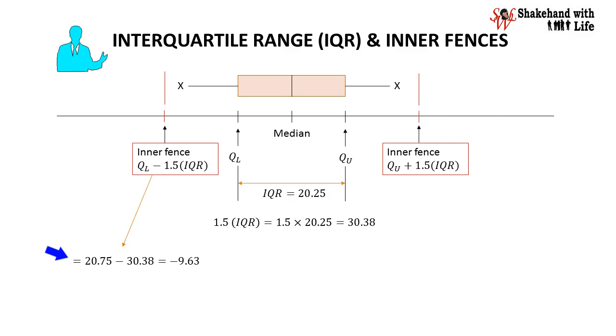Now the position of lower inner fence will be lower quartile QL minus 1.5 IQR or 20.75 minus 30.38 and we get minus 9.63.